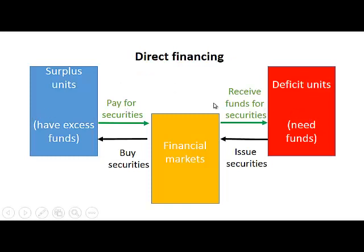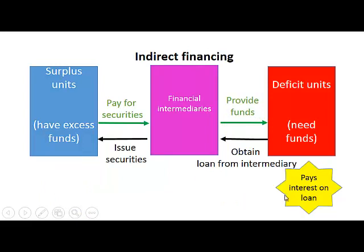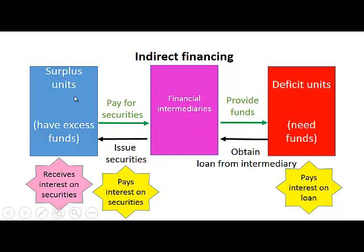In direct financing, deficit units pay interest on the securities they issue, and surplus units receive that interest — or dividends if shares are involved. In indirect financing, deficit units pay interest on the loan obtained from the financial intermediary, the intermediary pays interest on the securities it issued to surplus units, and the surplus units receive interest on those securities.